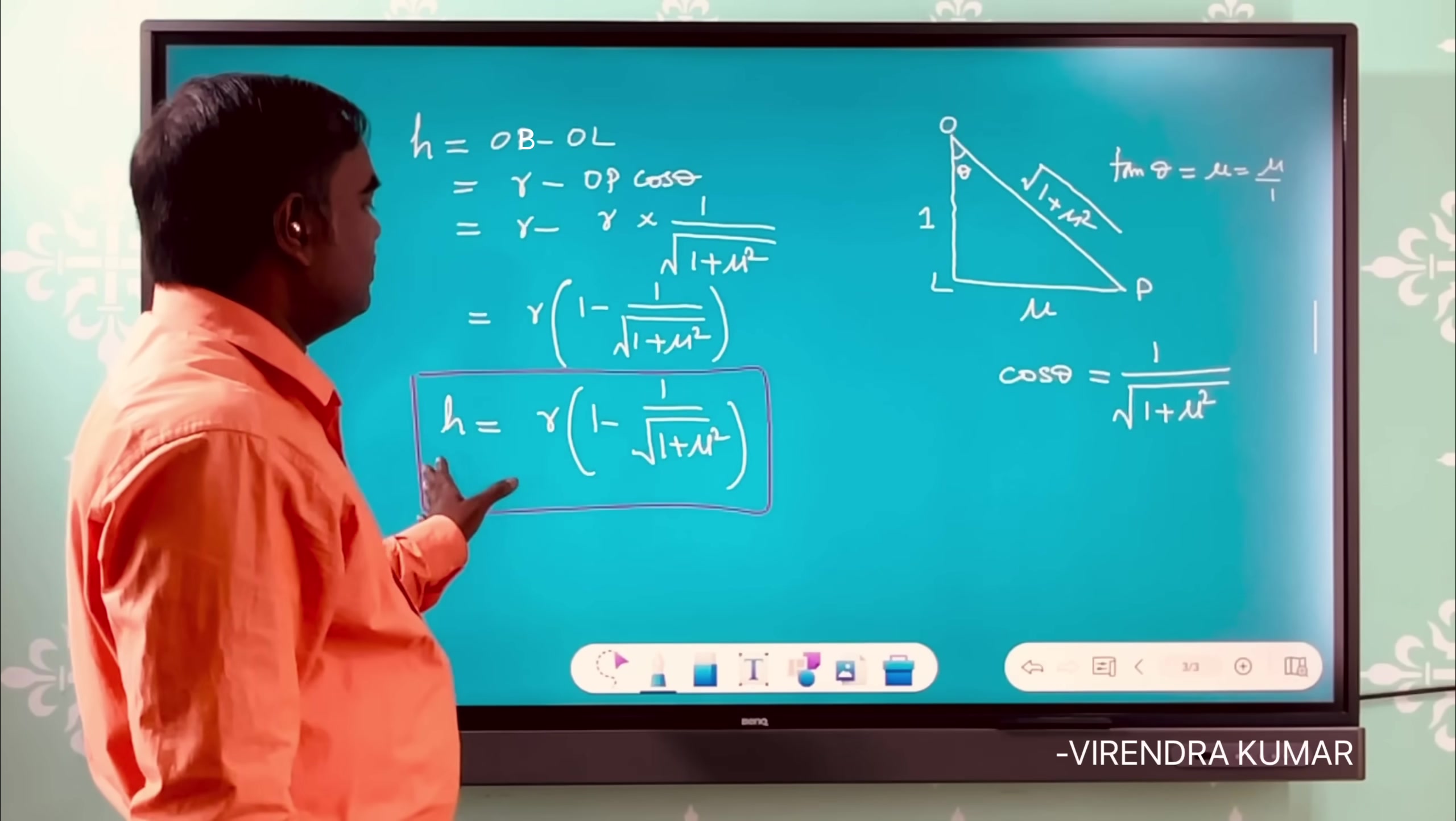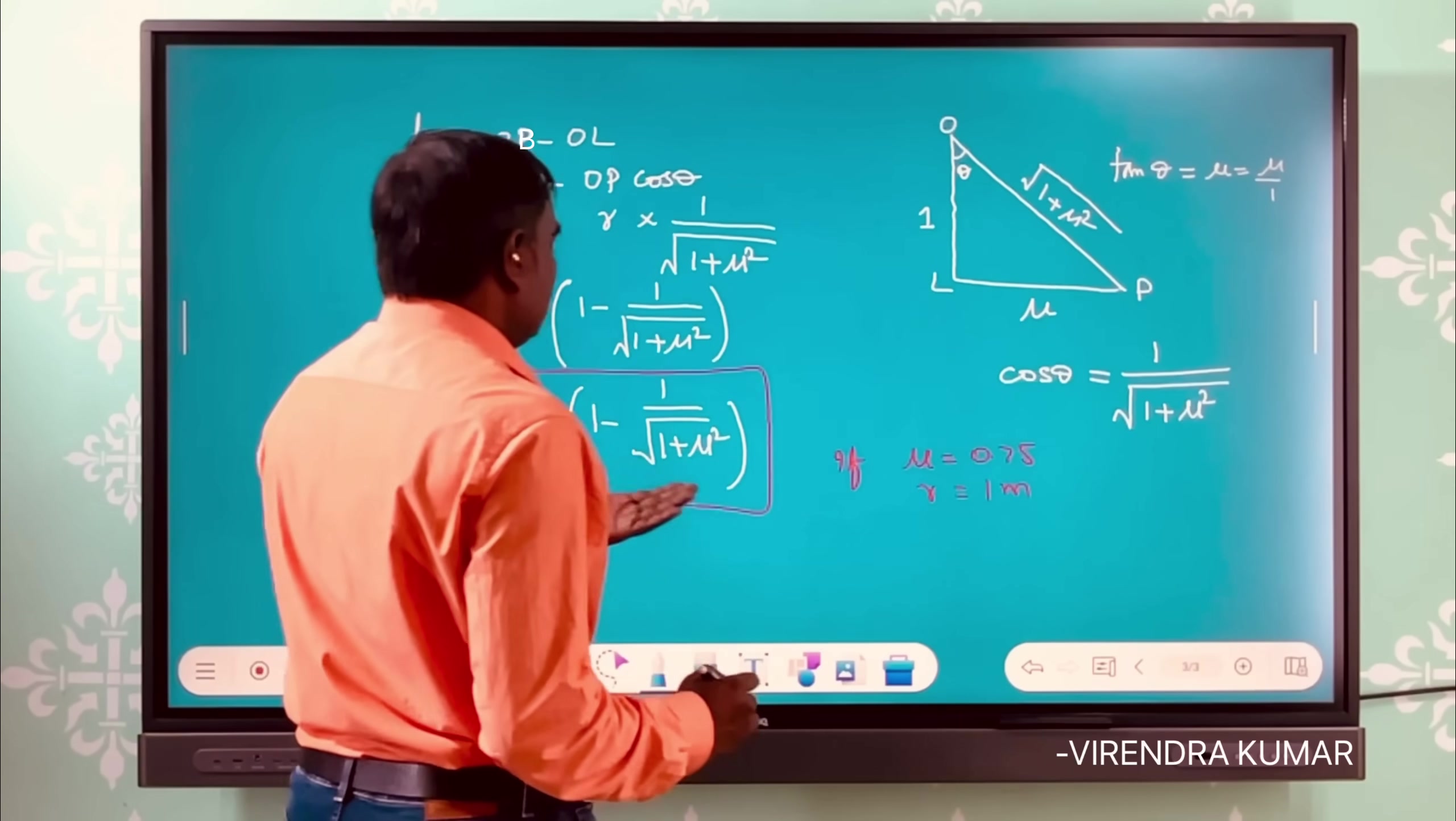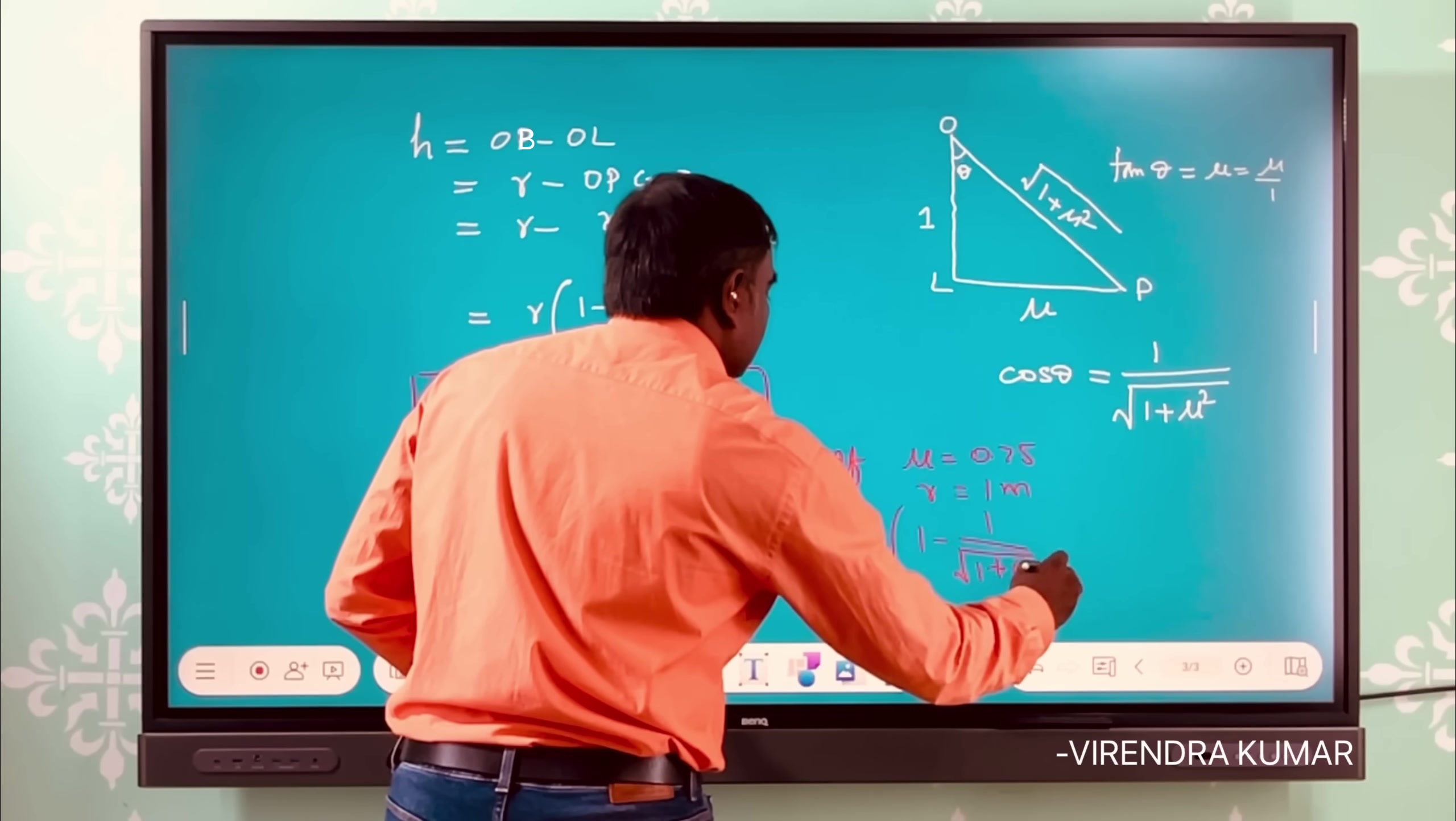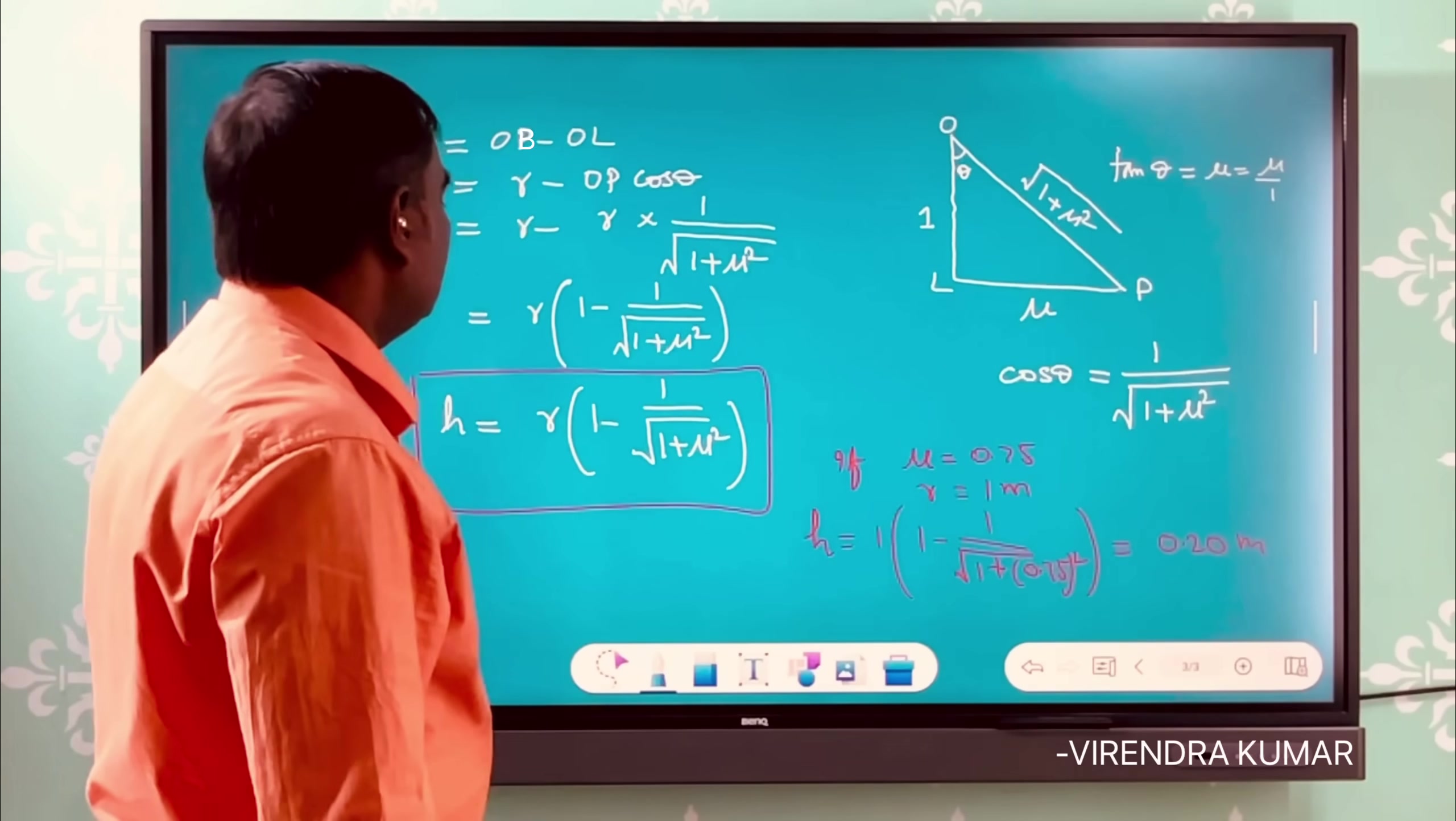Or if in a particular case μ is equal to 0.75, r is equal to 1 meter, then after putting this value we can get a special case: h equals 1 times (1 - 1/√(1 + 0.75²)). So you will get 0.2 meters after simplifying this.